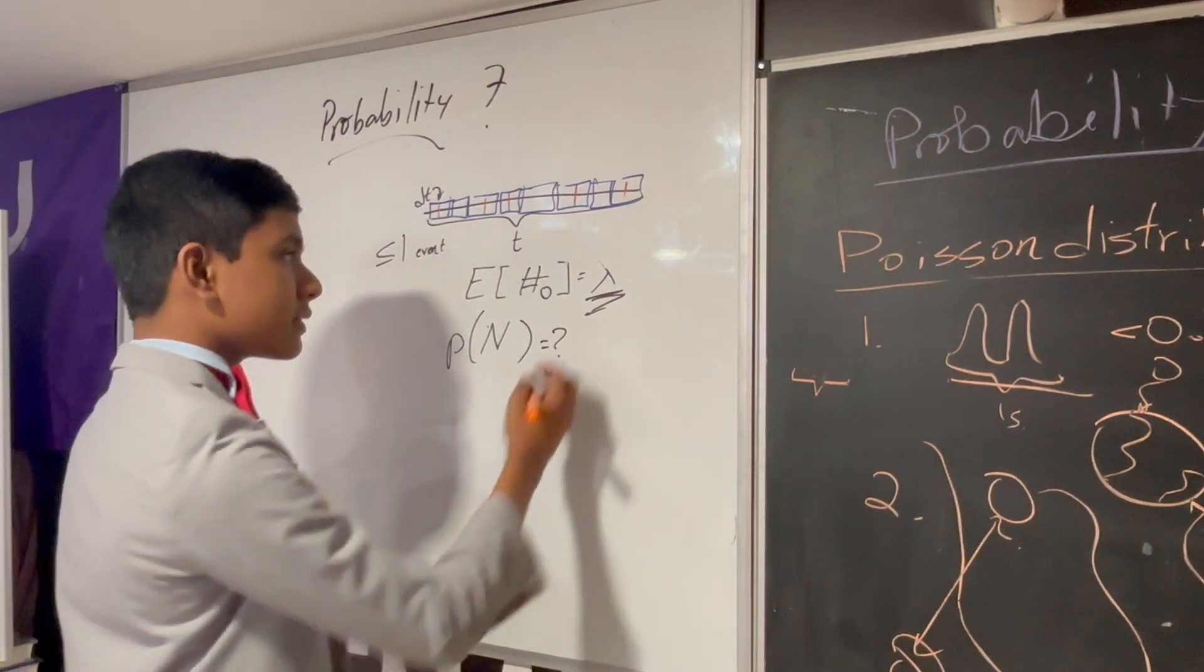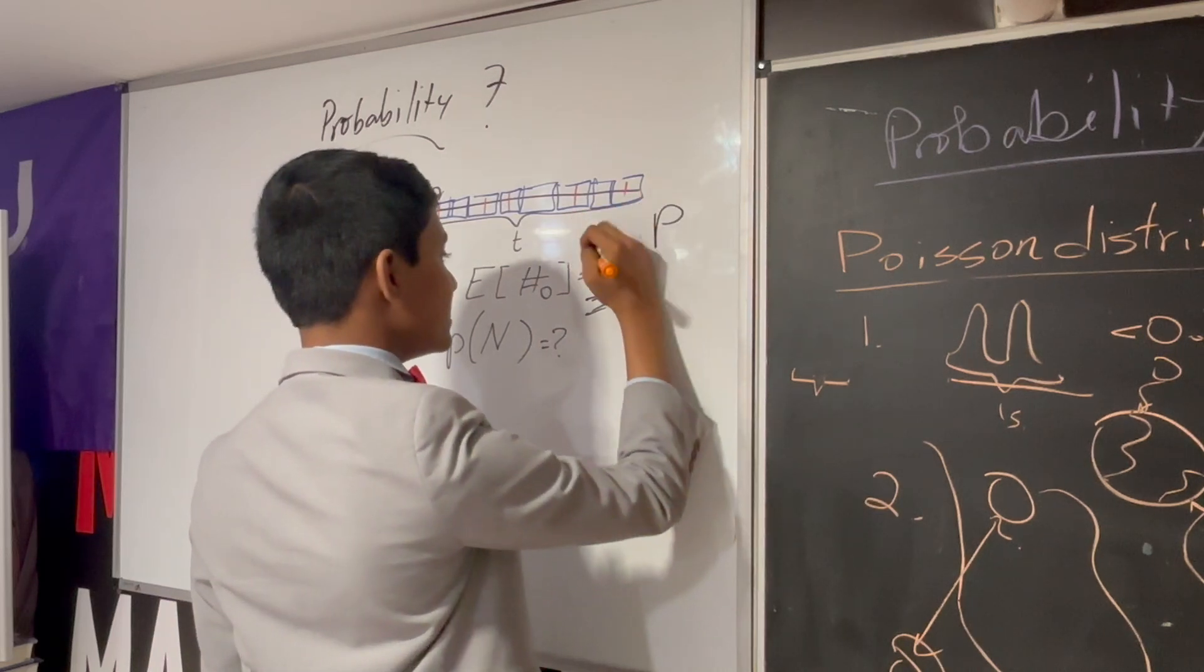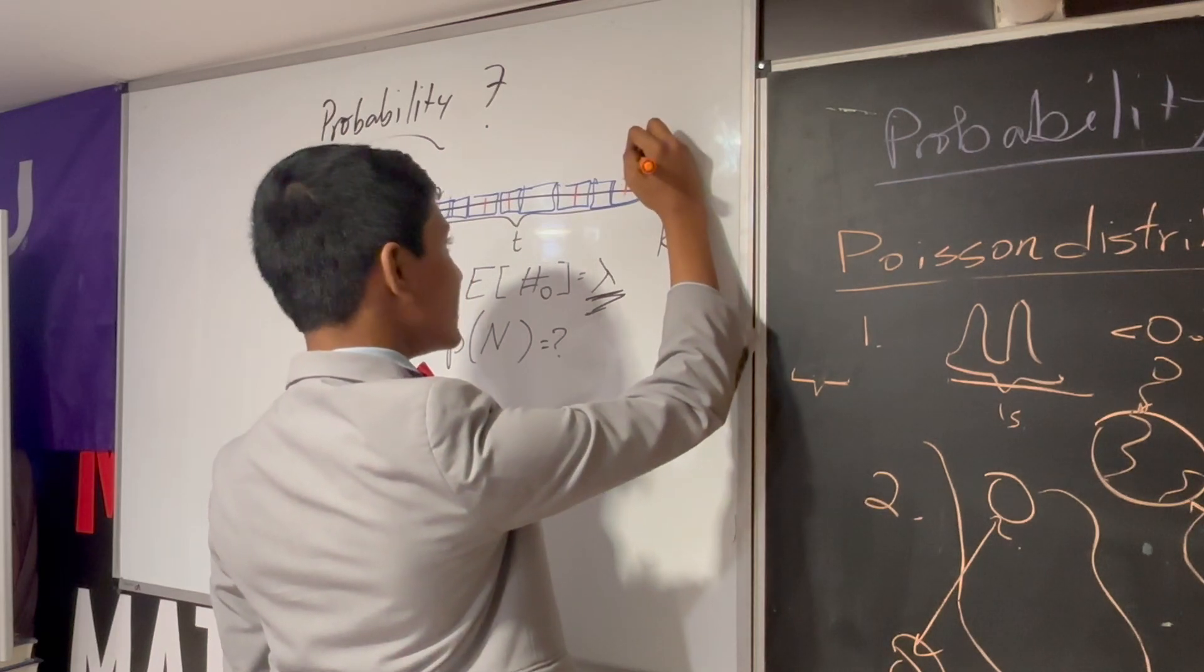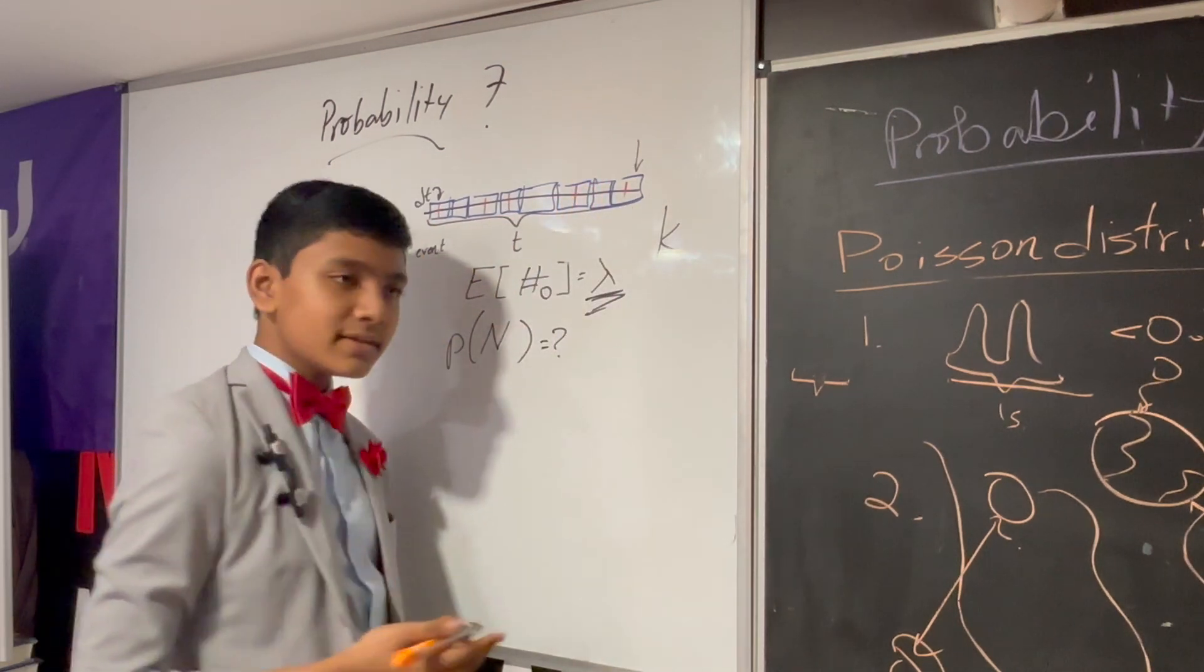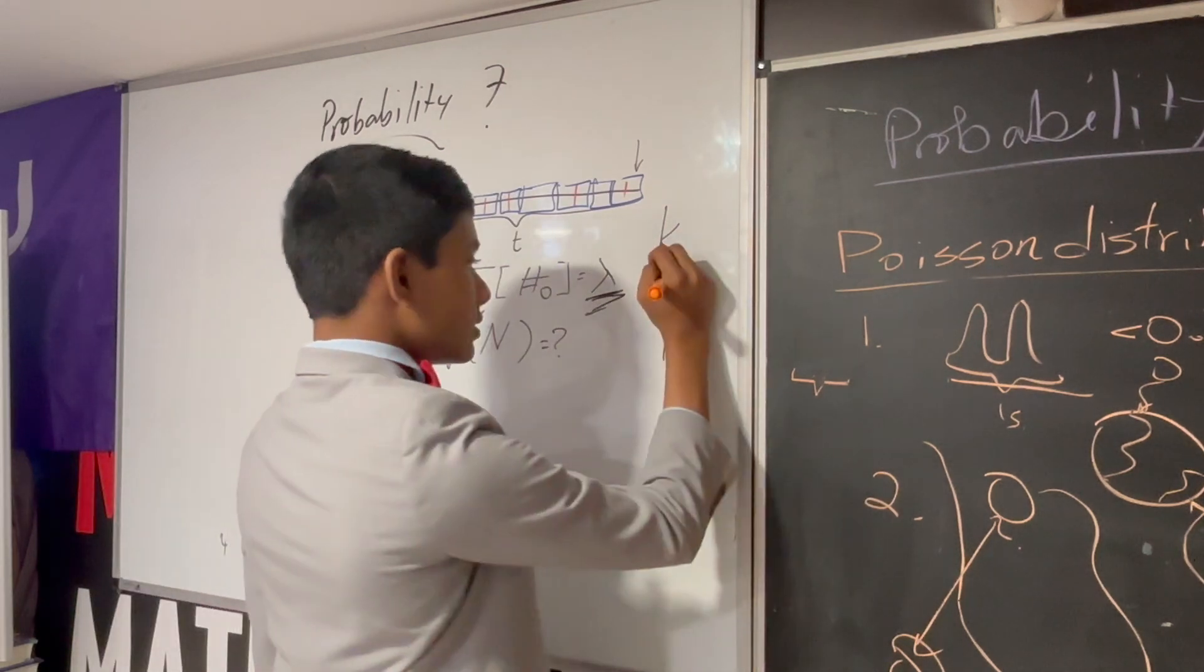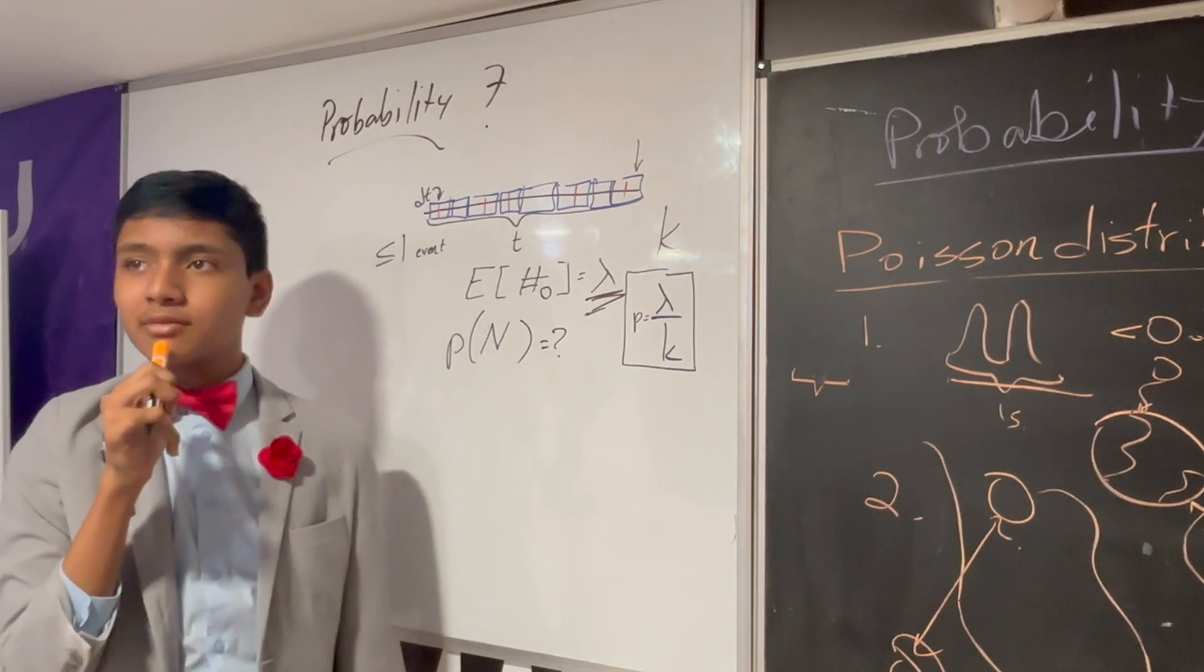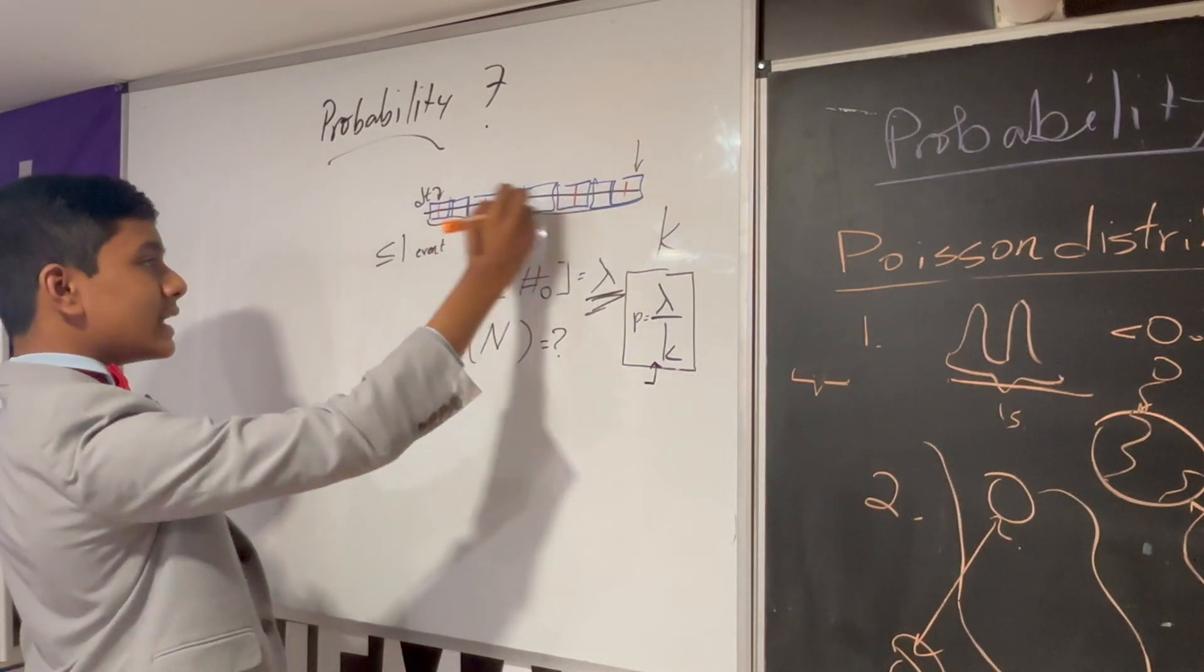Now, let's say I've cut it up so finely that there are now K pieces. So, now we're going to assume that the probability of you picking any one of these boxes and it containing an occurrence of the event is going to be lambda over k. Pretty reasonable, right?